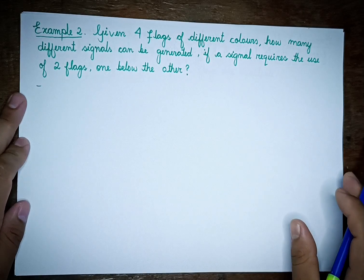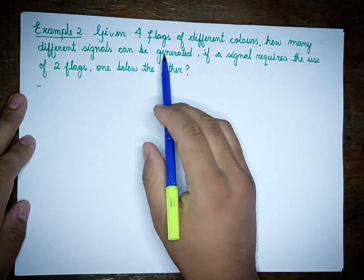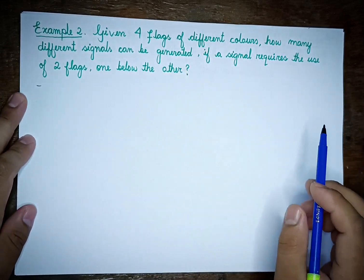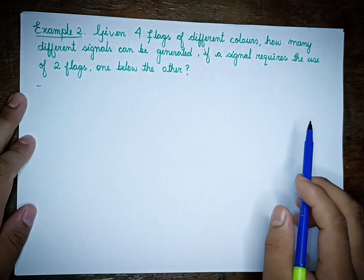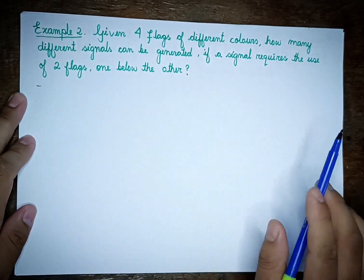For example number two: given four flags of different colors, how many different signals can be generated if a signal requires the use of two flags, one below the other?